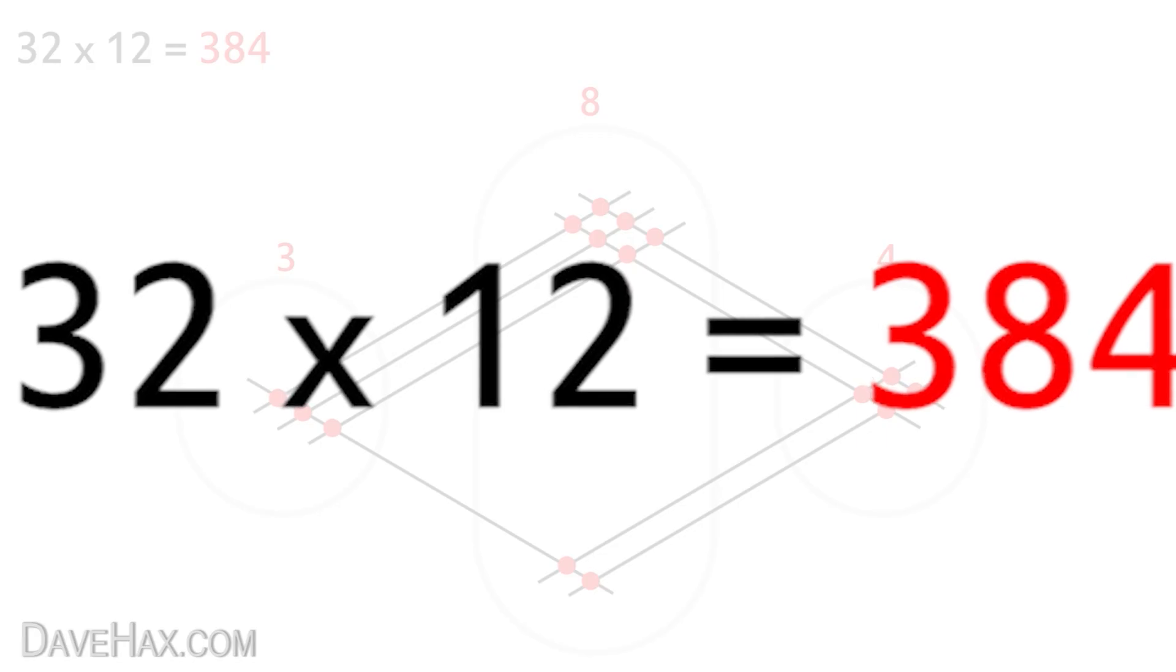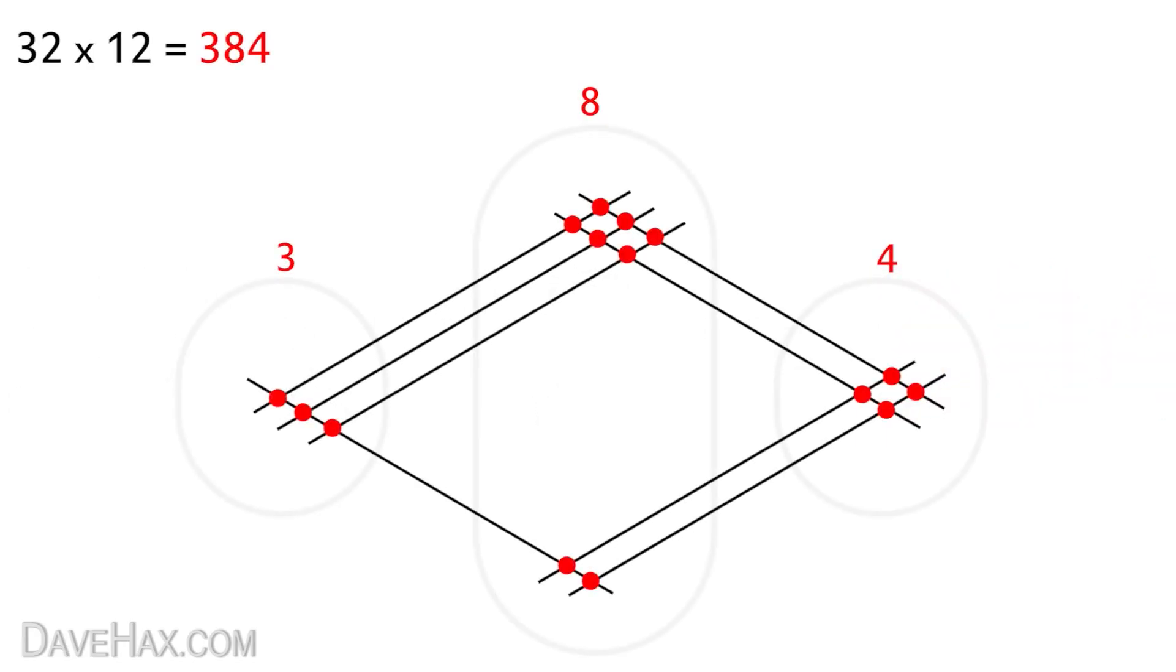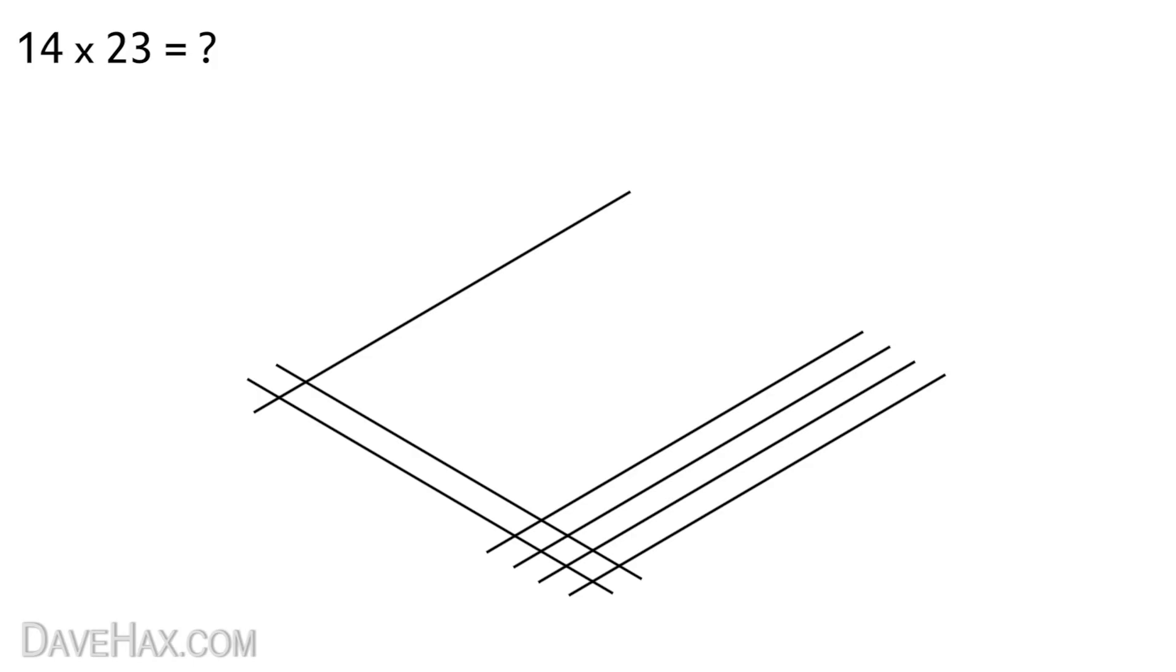But it does get a little more complicated if we add more lines. I'll show you. Let's multiply 14 by 23. So draw out the pattern. 1, 2, 3, 4. 2 and 1 2 3. Mark out our zones. And now let's count the dots.